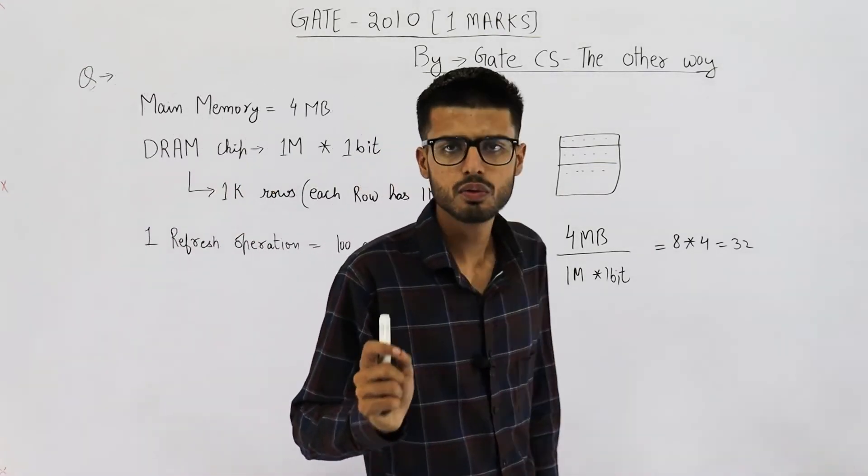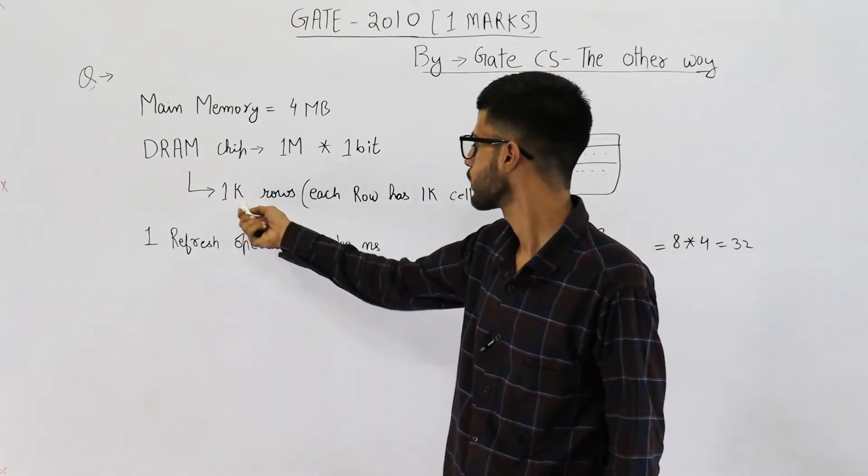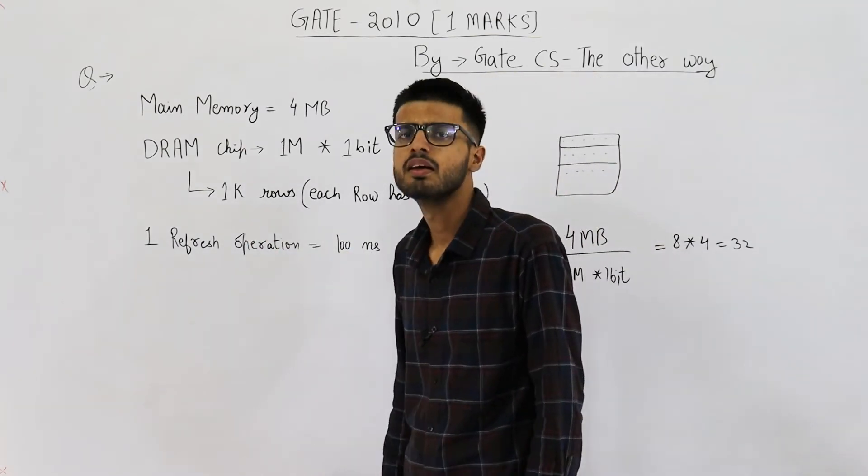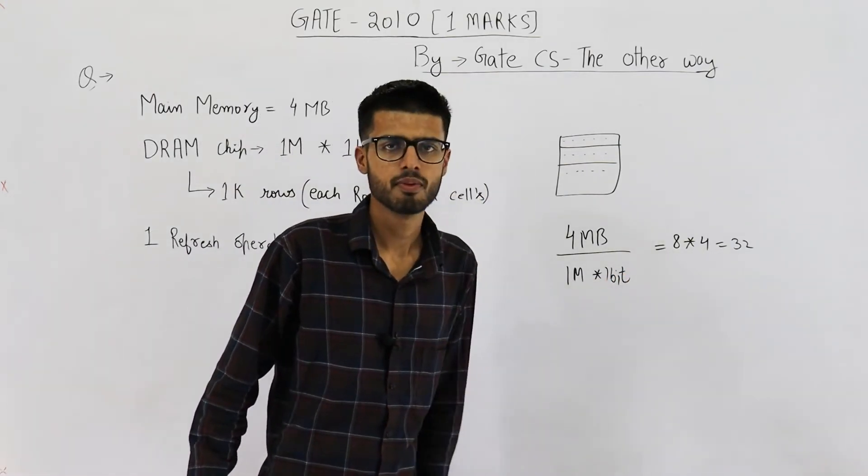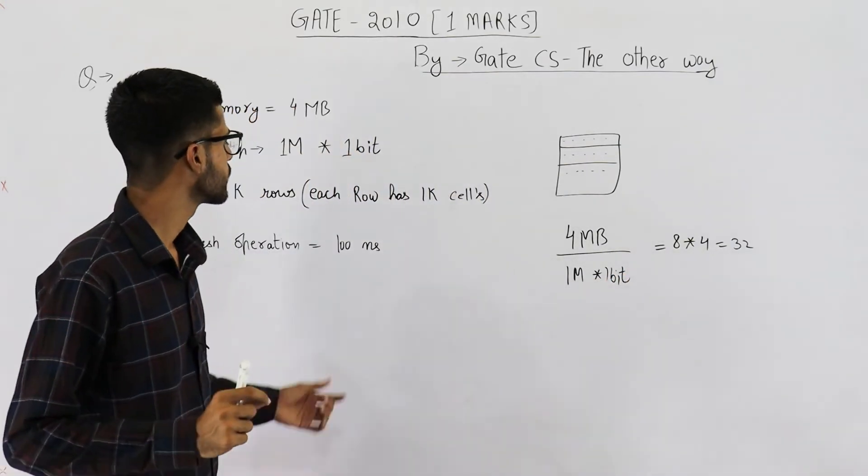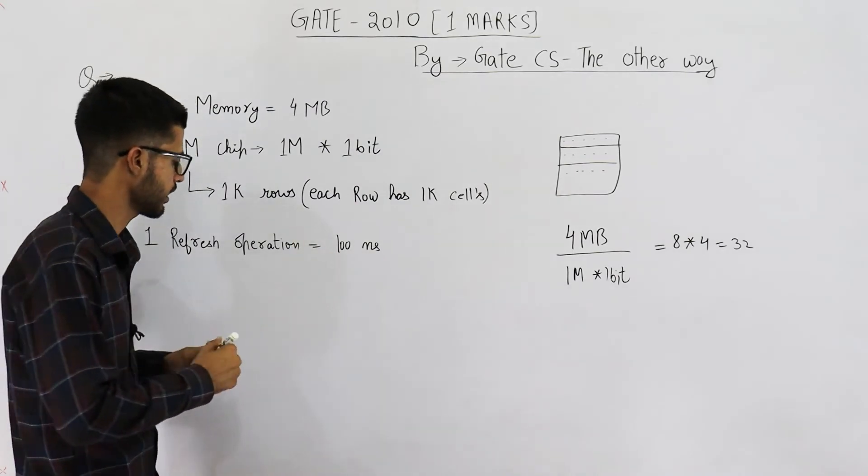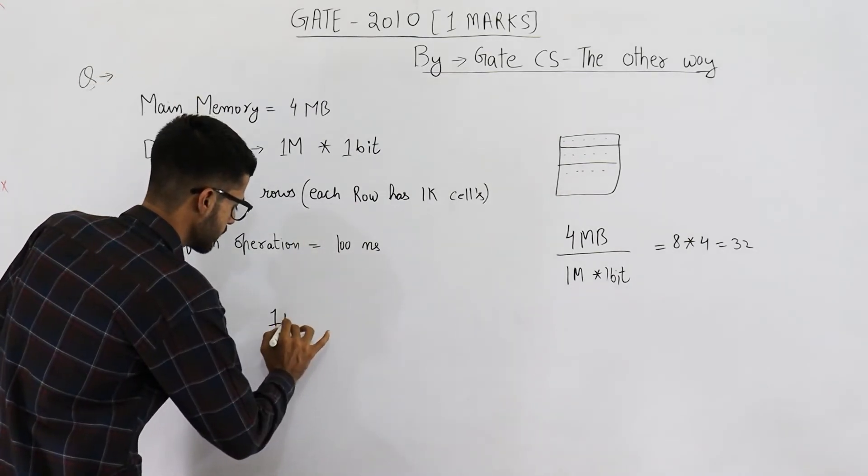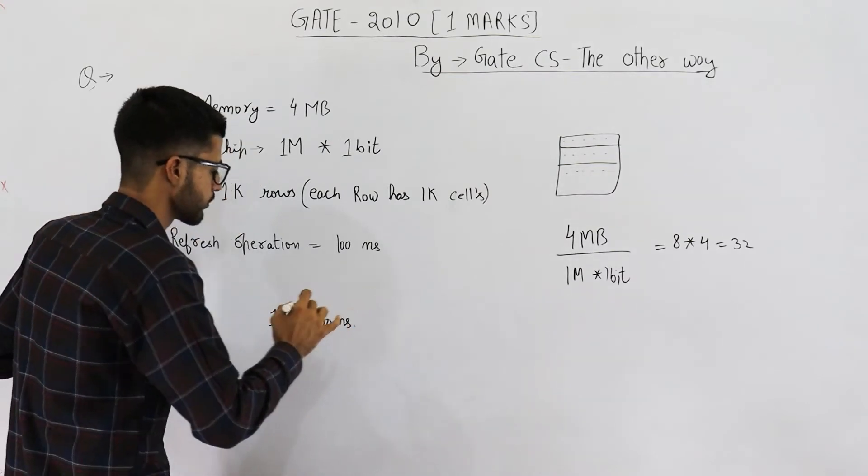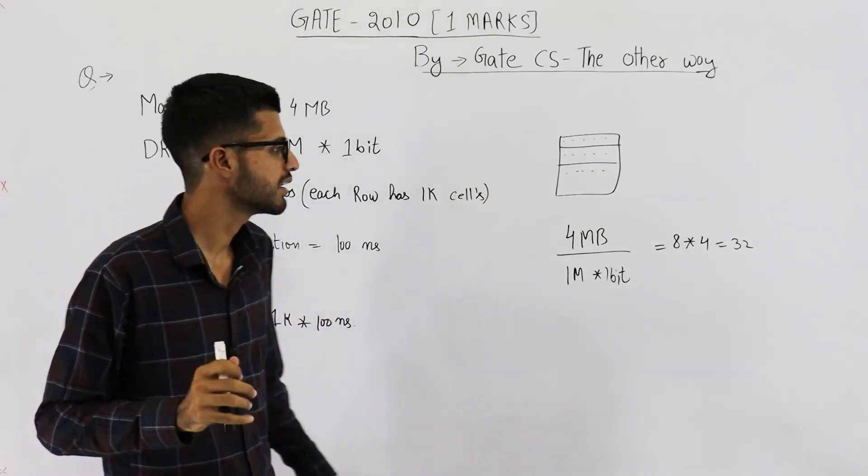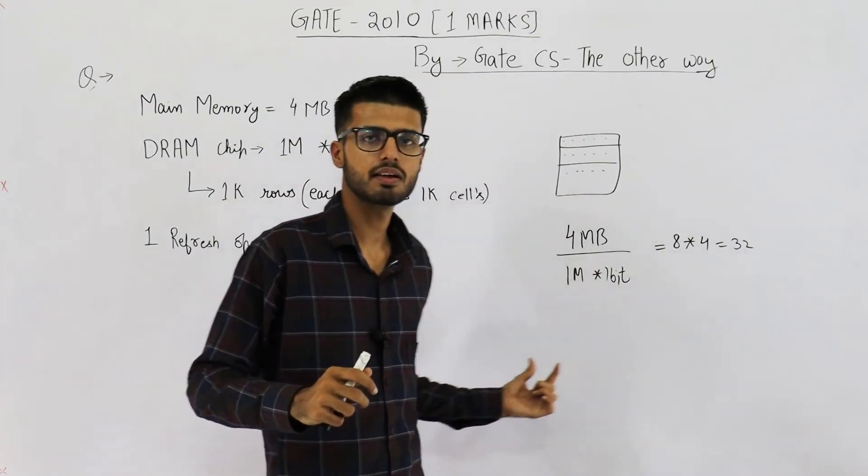Now, I have already told you the answer that it is 1K into 100 nanoseconds. Some of you might get a doubt. If we have 32 chips, why are not we multiplying this? I told you that answer is 1K multiplied by 100 nanoseconds. Some of you might argue, why are we not multiplying it by 32?